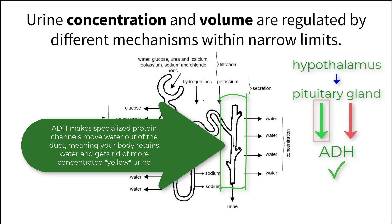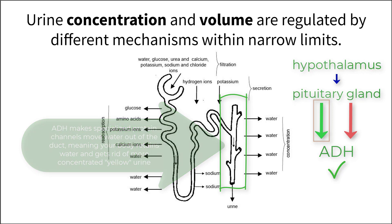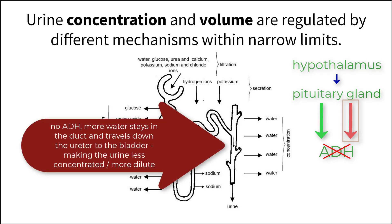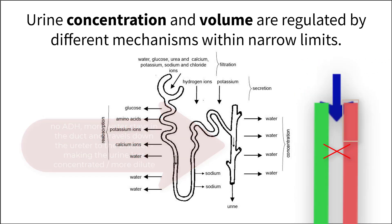This will force water to move out of the collection duct and into the interstitial fluid and paratubular capillaries, leaving the urine with a higher concentration of solutes to excrete. On the flip side, if osmolality is decreased in the body, then ADH is not produced, meaning that the protein mechanisms do not function and water stays in the urine, making it less concentrated and dilute.